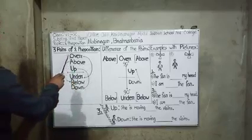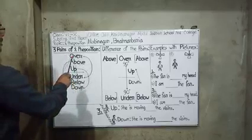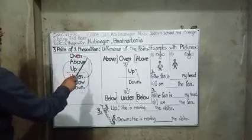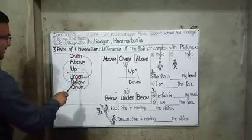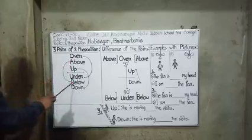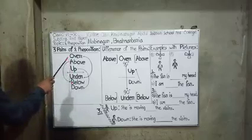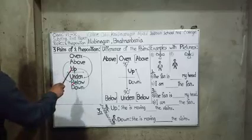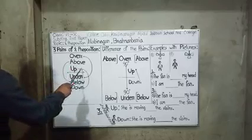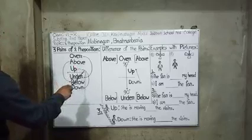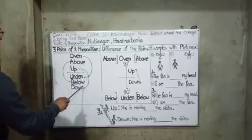The first pair: over and under. Over means up and its opposite is under. Under means down. The second pair: above and below. Above means up and its opposite is below. Below means down. The third pair: up and down. Up means up and its opposite is down.